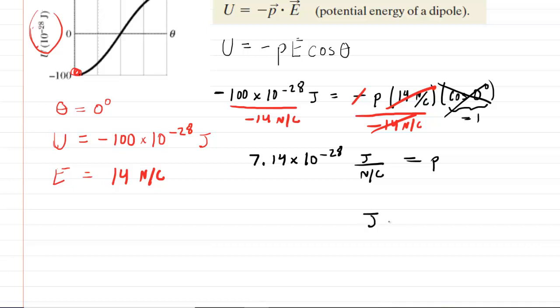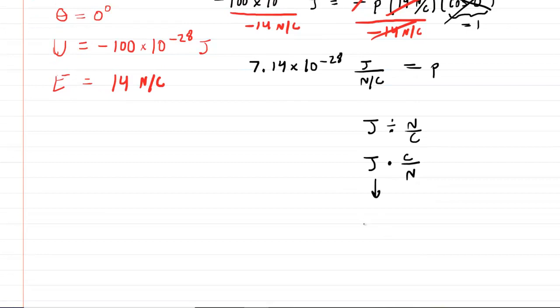So, we have joules being divided by a newton per coulomb. Remember that when you divide by a fraction, you can re-express that as multiplication of the reciprocal. So, you'll have joules times coulombs over newton. Remember also that a joule is the same thing as a newton meter. So, when you multiply a newton meter by a coulomb per newton, these newtons will cancel out, and that will leave you with the final unit as coulomb meters.